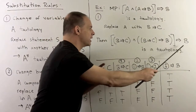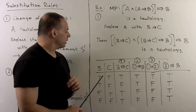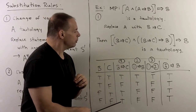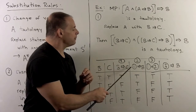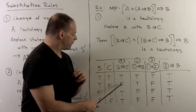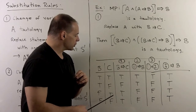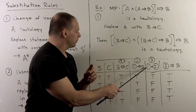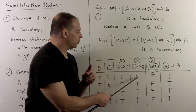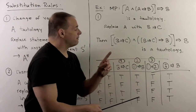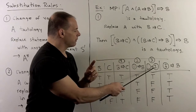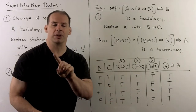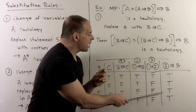Setting up the truth table for this statement with B and C: B implies C gives TRUE, FALSE, TRUE, TRUE. Then (B implies C) implies B: true-to-true is true, false-to-true is true, true-to-false is false, true-to-false is false. Taking (B implies C) AND ((B implies C) implies B), we get TRUE, FALSE, FALSE, FALSE. Finally, this column implies B: true implies true is true, and all false implies anything are true. So we get a tautology as promised.